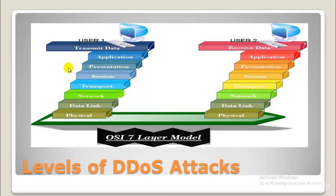On the other hand, Layer 7 DDoS attacks hit the victim server from the rear, leveraging well-known applications such as HTTP, Voice Over Internet Protocol, or DNS. The goal of application layer DDoS attacks usually has nothing to do with overwhelming bandwidth. Some IT experts call them 'low and slow' for a reason — they frequently exhaust CPU or memory resources at close range. Hence, Layer 7 DDoS leverages inherent flaws and limitations of applications. Since system resources are always finite, heavy resource consumption will eventually render the server incapacitated.